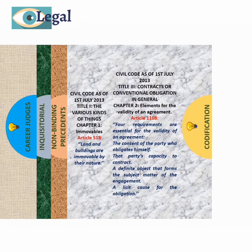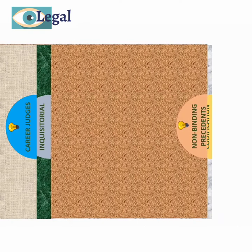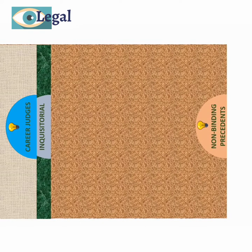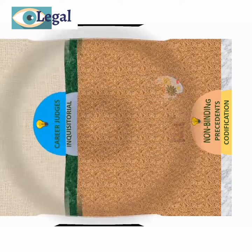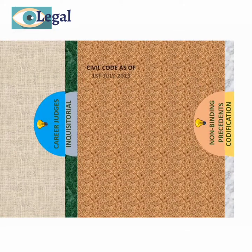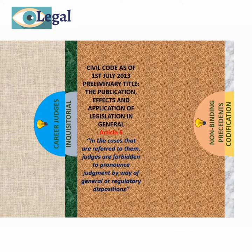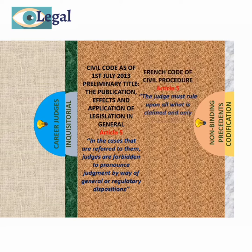Another feature of the civil law system is that judgments are not binding. That is, as opposed to the common law system, judges are not obliged to reason in line with the previous decision of a higher court, and such decisions are merely persuasive. In fact, judges are forbidden to make decisions on a general basis and are to pronounce only on the cases before them. This is as opposed to the common law system, where judges make pronouncements that could affect the whole system.